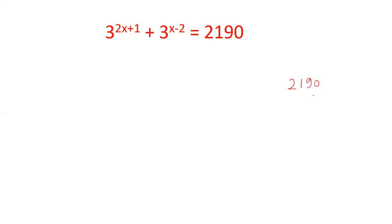Friends, 2190 is the number and it is expressed as the sum of two different powers of 3. Now let me write down all the possible powers of 3. 3 power 1 is 3, 3 power 2 is 9, 3 power 3 is 27, 3 power 4 is 81, 3 power 5 is 243, 3 power 6 is 729.